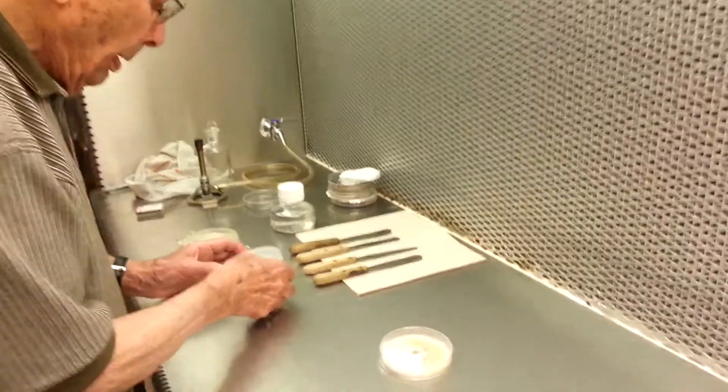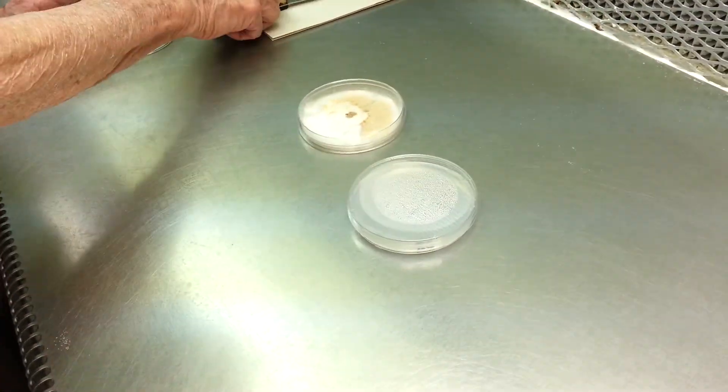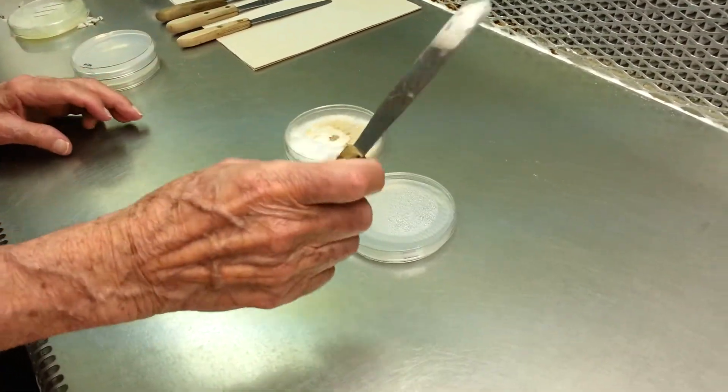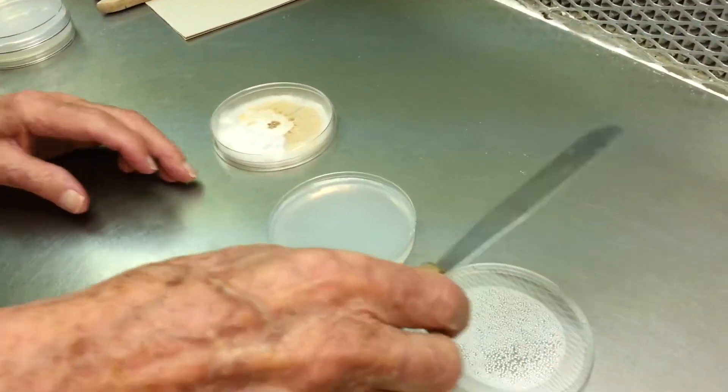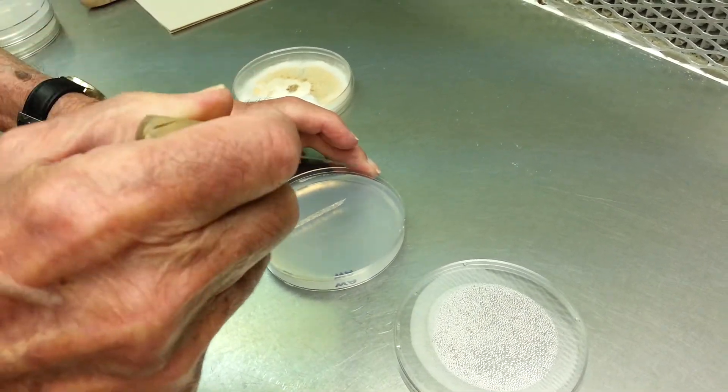Okay. Now the water agar method: take a dish that has water agar in it, and we cut out a block.